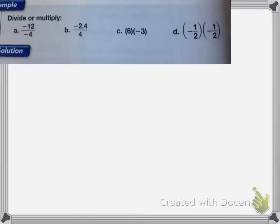With these problems, for A, I have negative 12 divided by negative 4. My two signs are the same, which means my answer is going to equal positive 3.